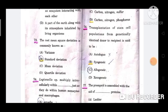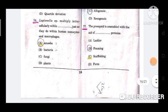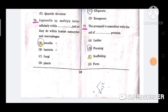Question number 76: Transplantation of stem cell populations from a genetically identical donor to the recipient is said to be? The correct answer is option B, syngeneic. Question number 77: The procapsid is assembled with the aid of -- proteins. Option C, scaffolding.